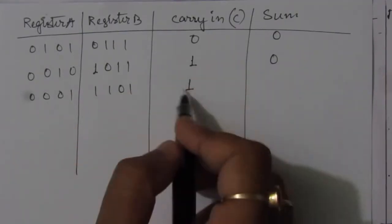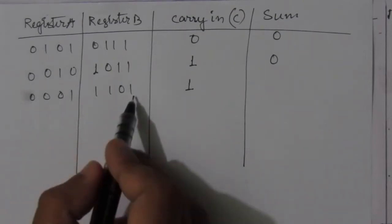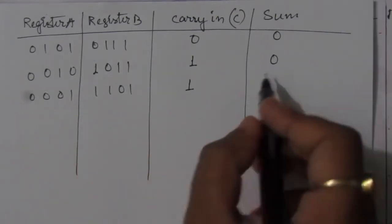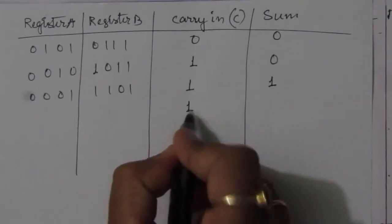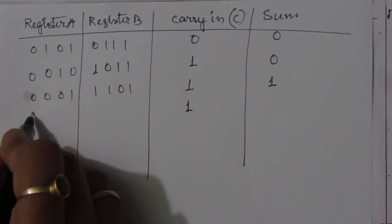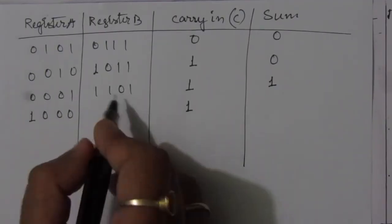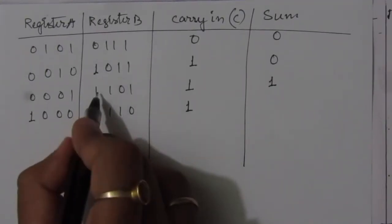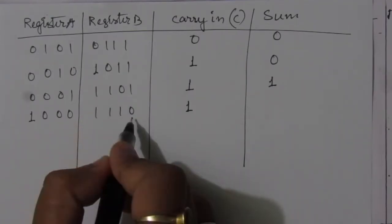For the third clock cycle with carry in = 1: x = 1 and y = 1, so 1 + 1 + 1 gives sum = 1 and carry = 1. This 1 enters register A giving 1000, and register B becomes 1110 as one enters and the three bits shift right.